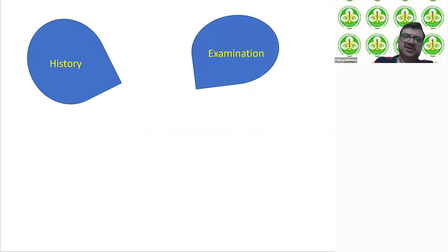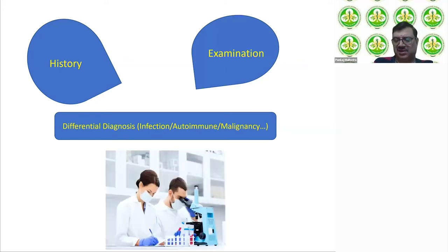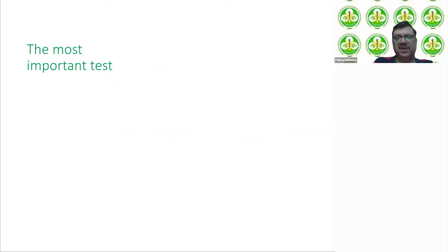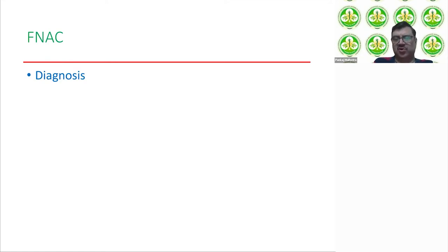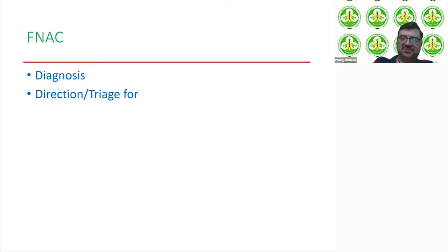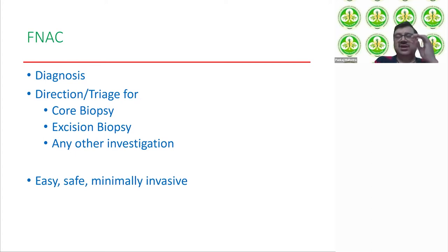After history and examination, you will reach a differential diagnosis and try to fit the lymphadenopathy into the broad categories of infection, autoimmune disorders, or malignancy, then proceed to investigations. The most important test for any lymphadenopathy is fine needle aspiration cytology (FNAC). FNAC will either give you the diagnosis or triage — giving direction toward whether a core biopsy or excision biopsy or other investigation is needed. FNAC is very easy, safe, and minimally invasive and is therefore the first choice in most patients.